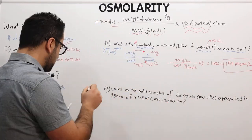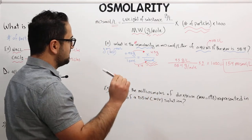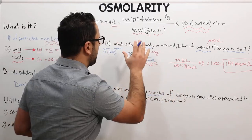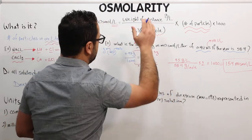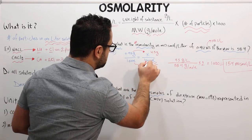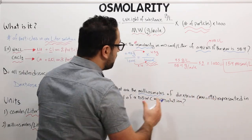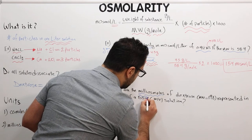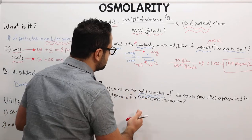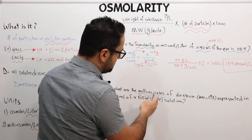Now let's look at question two. Question two asks: what are the milliosmoles of dextrose in a given solution? Notice the key difference — here we are looking for milliosmoles, not osmolarity. If we are looking for osmolarity, we always normalize to 1 liter. But here, we do not normalize to 1 liter — we normalize to whatever volume is given in the question. It is very easy to confuse these two.